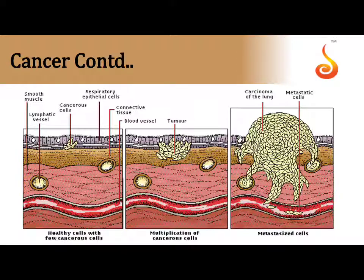In this slide, we are trying to understand two words: one is tumor and the other is cancer. Tumor is a localized growth of cells, or a mass of cells which has grown in a local area.